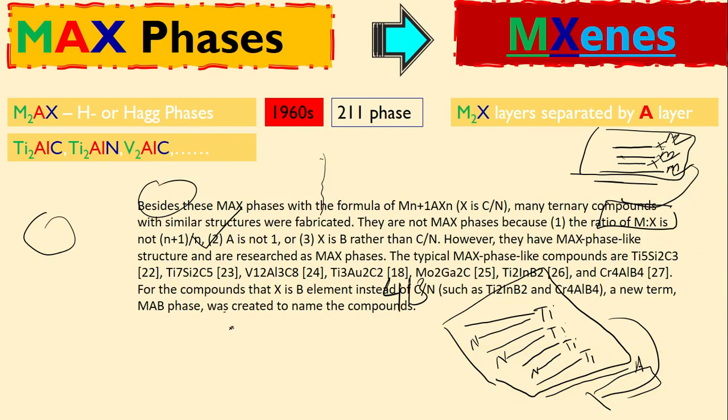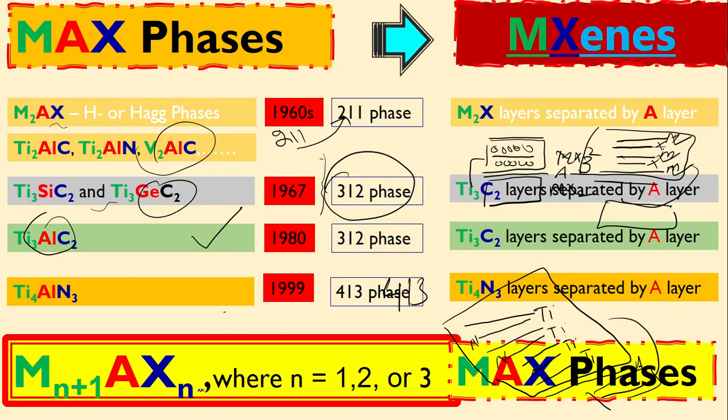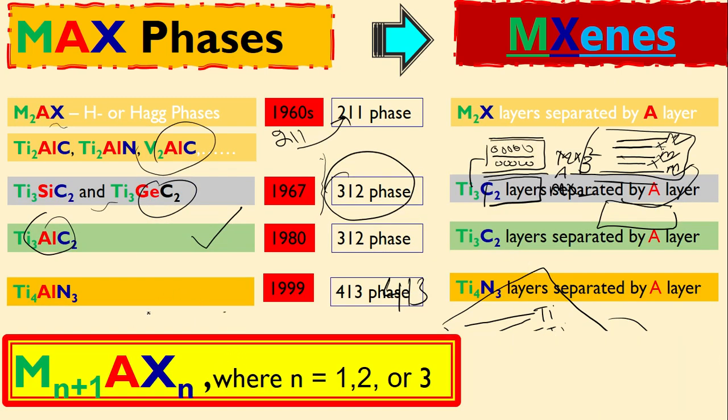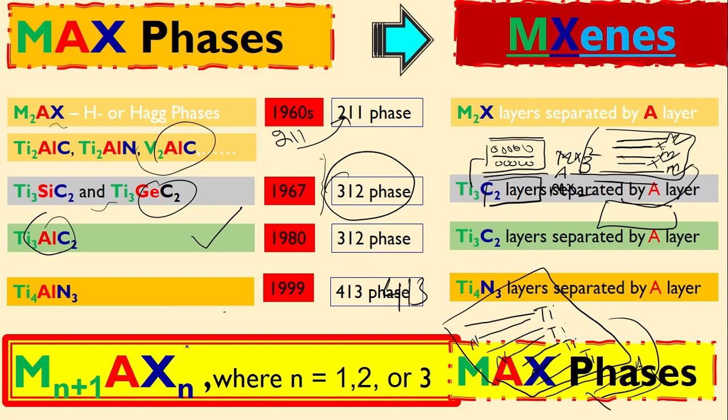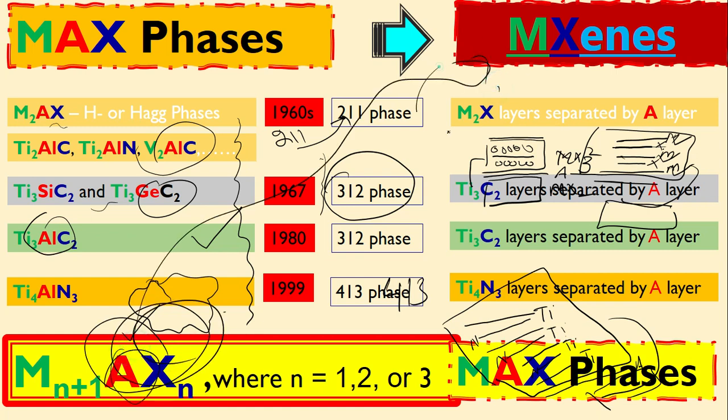This we call MAX phases. After this they realized that all these phases are represented by the same formula. And after 1999 this formula came into existence. This is MAX phases. Now when we remove this A we will get MXenes.